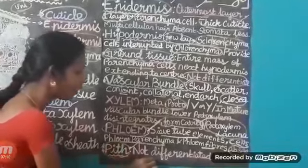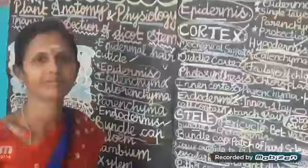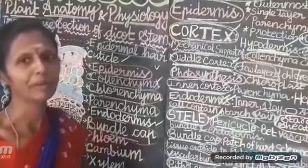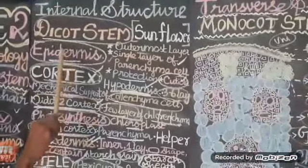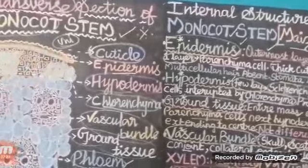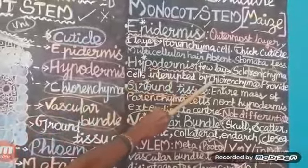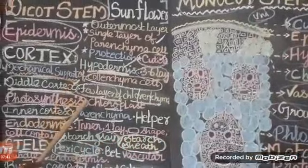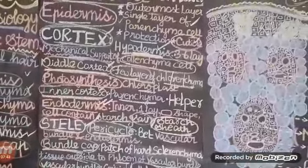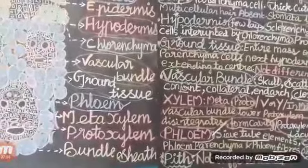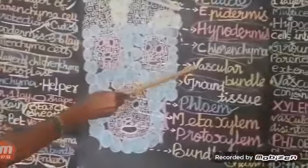It is not differentiated from the monocot. Finally, we see the summary. You can see the difference between the internal structure of dicot stem and the internal structure of monocot stem. Hypodermis contains chlorenchyma. Ground tissue is differentiated into cortex, endodermis, pericycle, and pith in dicot, but not differentiated in monocot. Third one is vascular bundle.